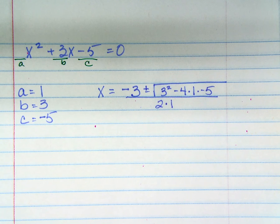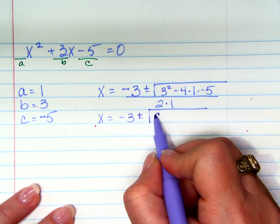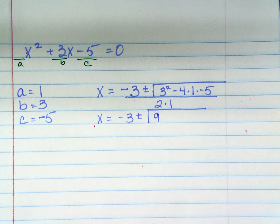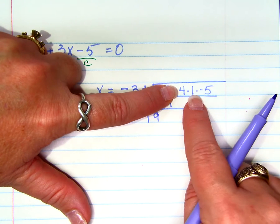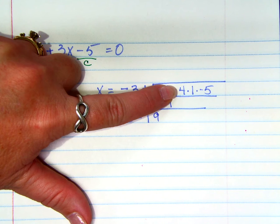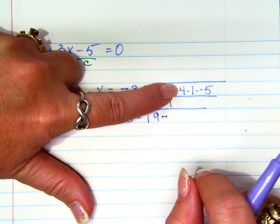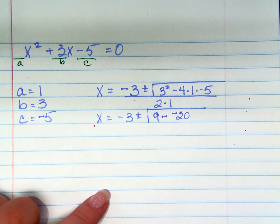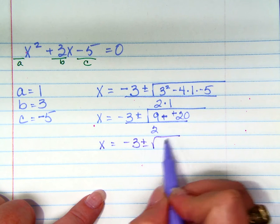x equals negative b plus or minus the square root of b² minus 4ac, all over 2a. Now all we have to do is simplify. x equals negative 3 plus or minus the square root of 9. Here's where you're going to mess up if you're going to mess up anywhere. It's what you have to decide — is this a negative 4, or is this minus 4 times 1 times negative 5? It's either one that you choose.